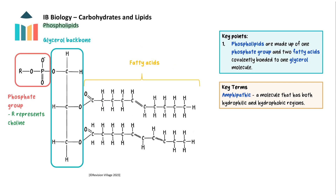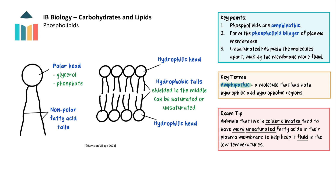Similar to triglycerides are the phospholipids. These have a phosphate group replacing one of the fatty acid tails. The phosphate group, represented with R for choline, is charged and so it is hydrophilic. The fatty acid tails are hydrophobic. Therefore, phospholipids are amphipathic. This amphipathic property is important in the role of phospholipids in the cell membrane, where they orientate themselves in a bilayer with their phosphate groups facing outwards in the aqueous environment and the fatty acid tails protected in the centre. Unsaturated fatty acids make a more fluid membrane as they push the molecules apart. Organisms in colder climates tend to have more unsaturated fatty acids, ensuring their membranes remain fluid at low temperatures.